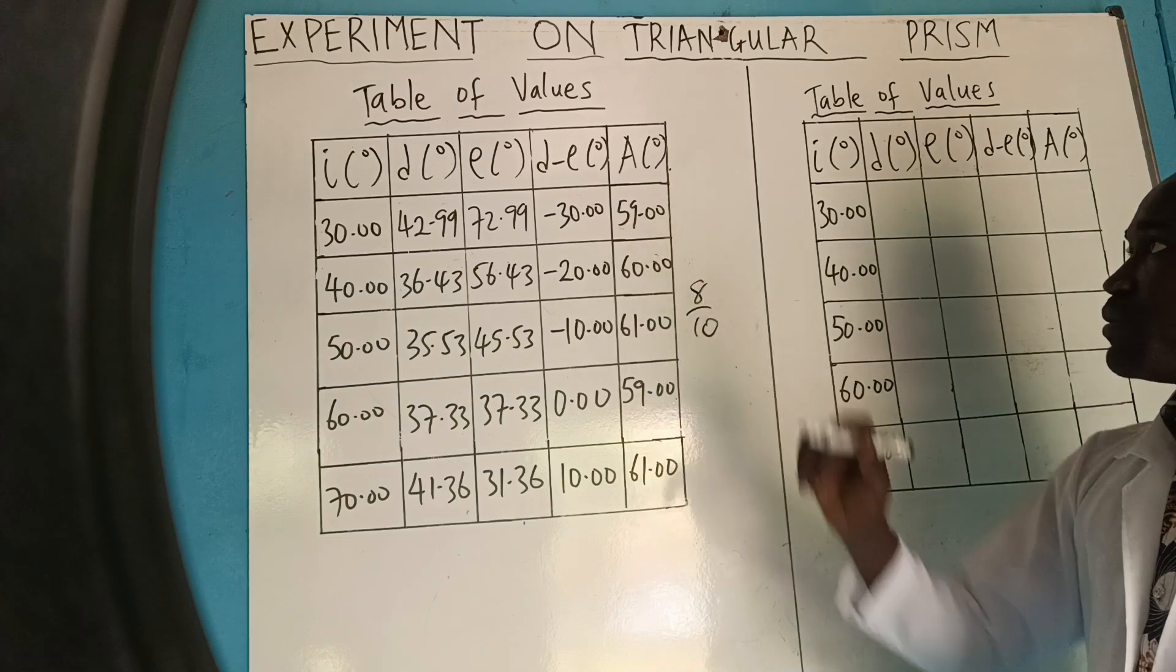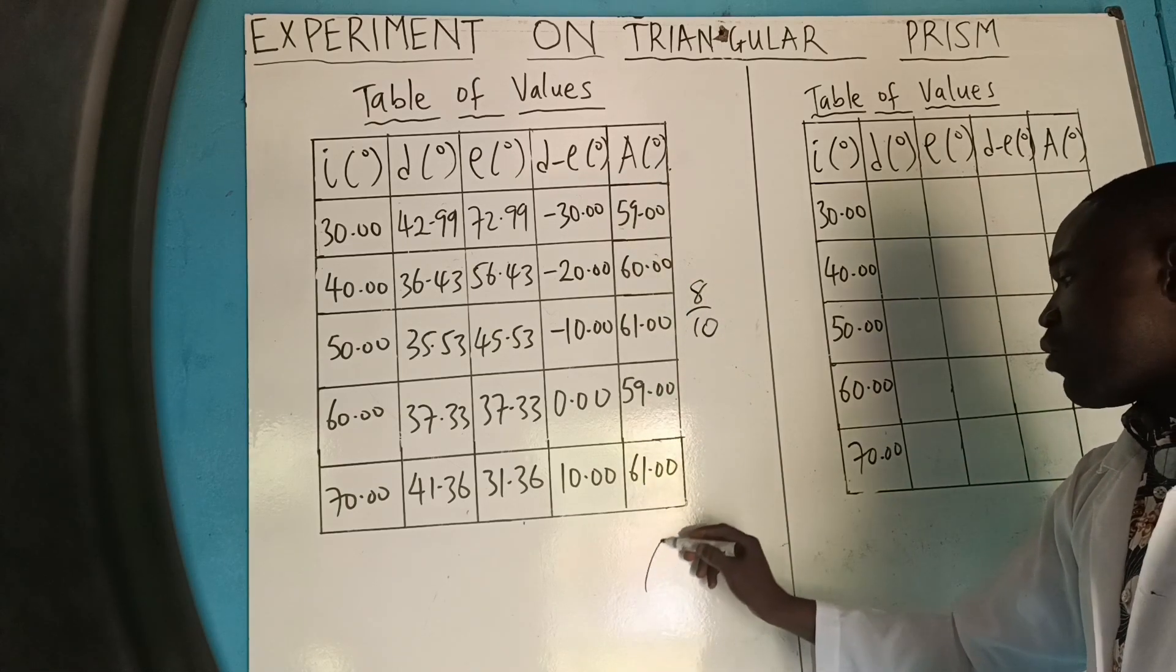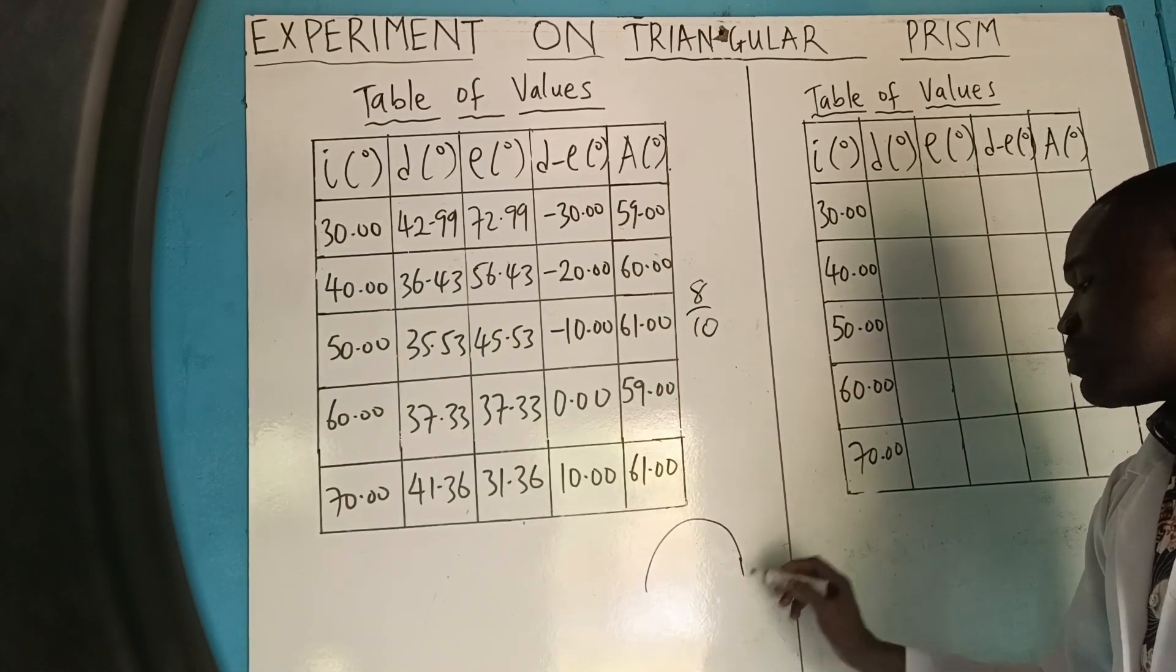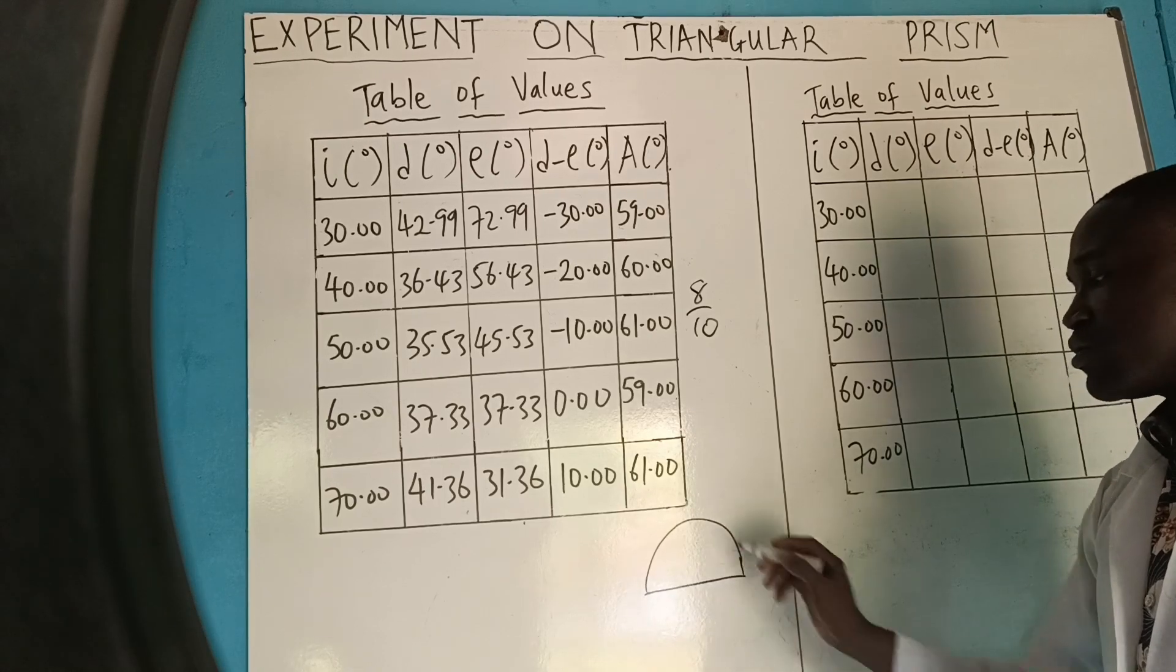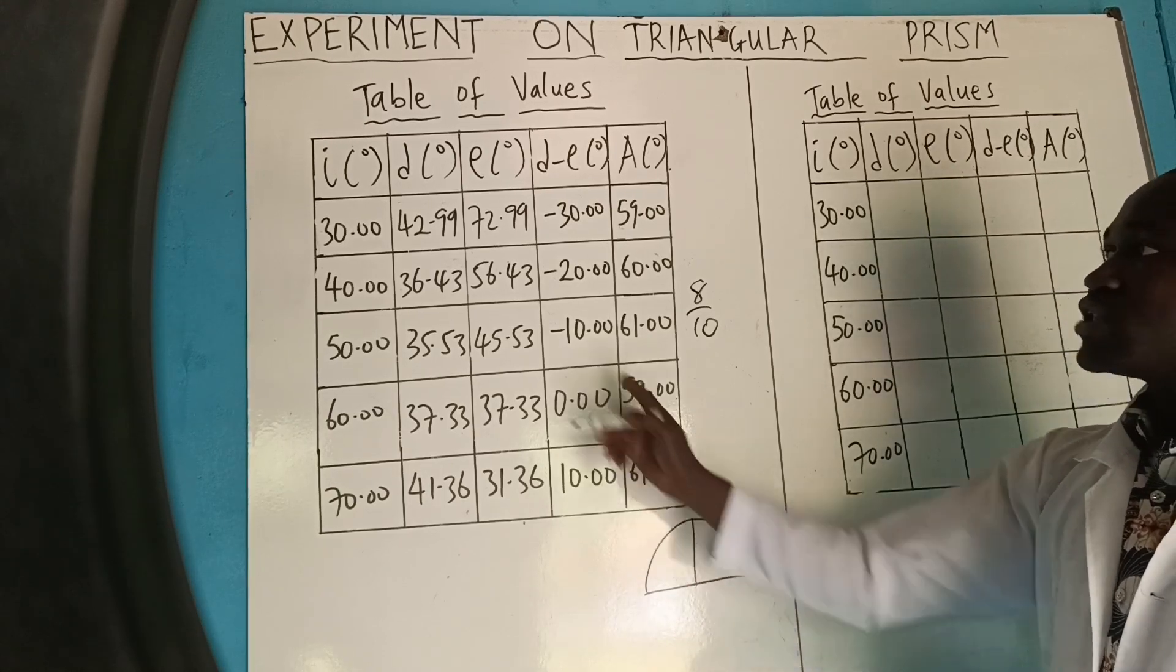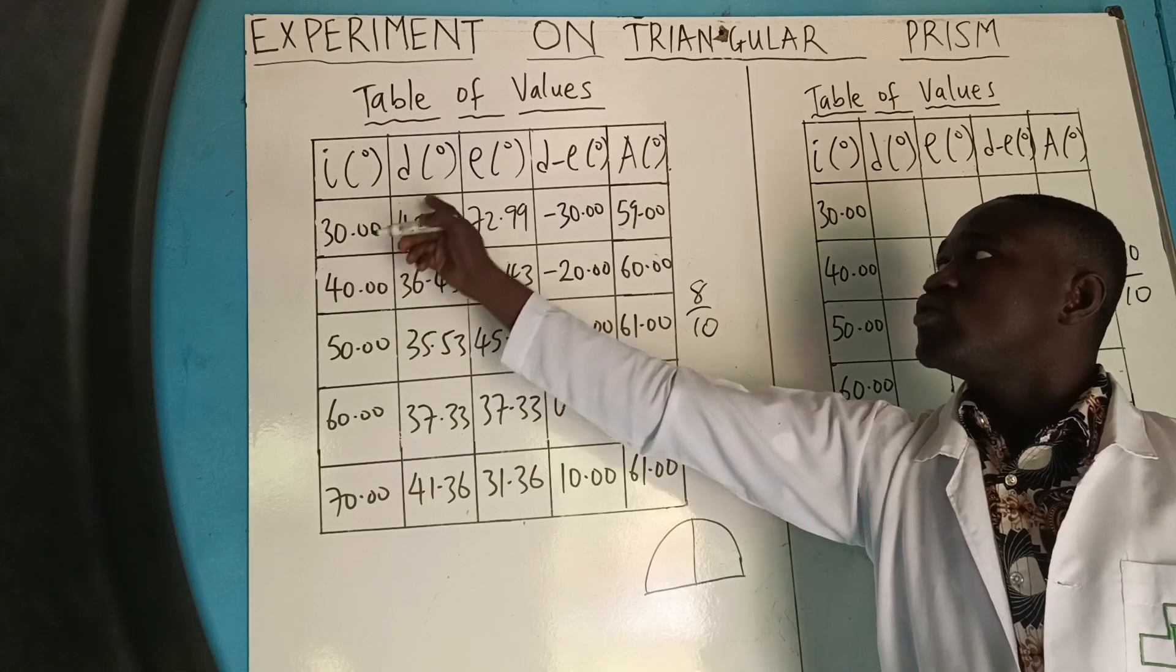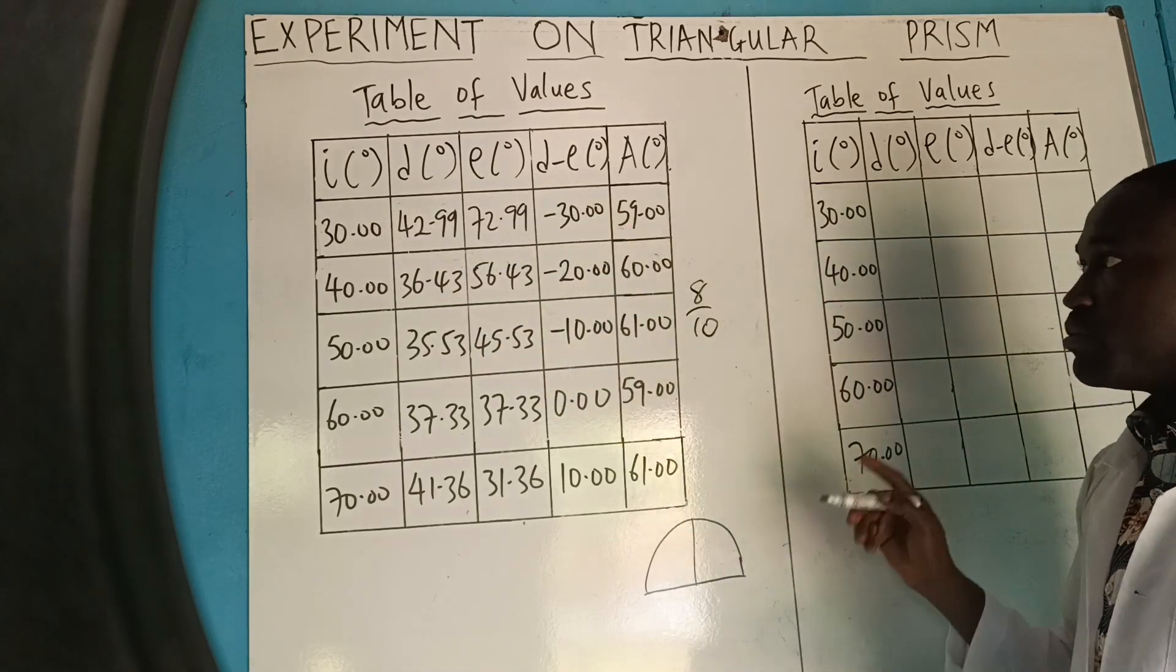For this experiment, the number one instrument you have to use is Protractor, because it is Protractor that you will use to get all these values in degrees to measure it out.